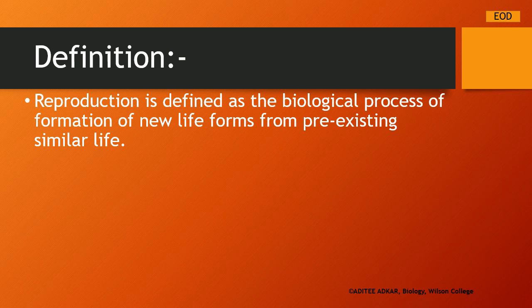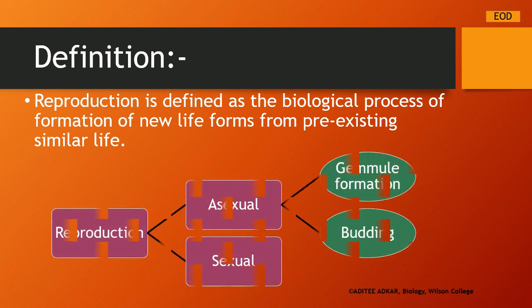Reproduction is a biological process in which new life forms arise from the pre-existing life forms. Reproduction is a very important characteristic of living organisms. Reproduction can be classified broadly into two types: sexual reproduction and asexual reproduction.